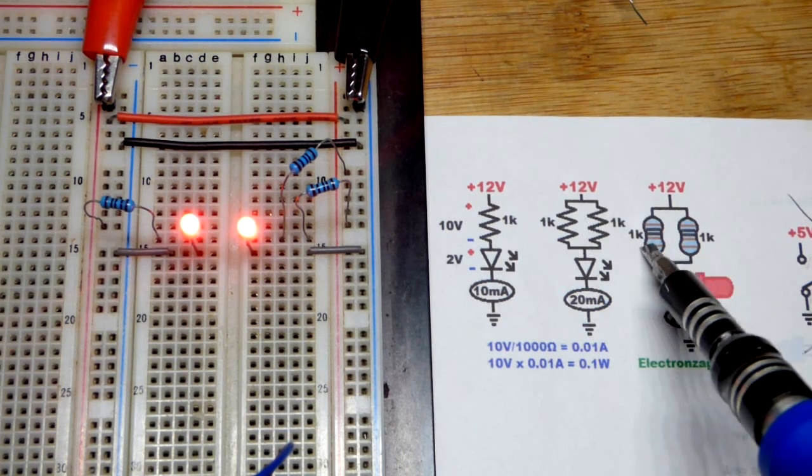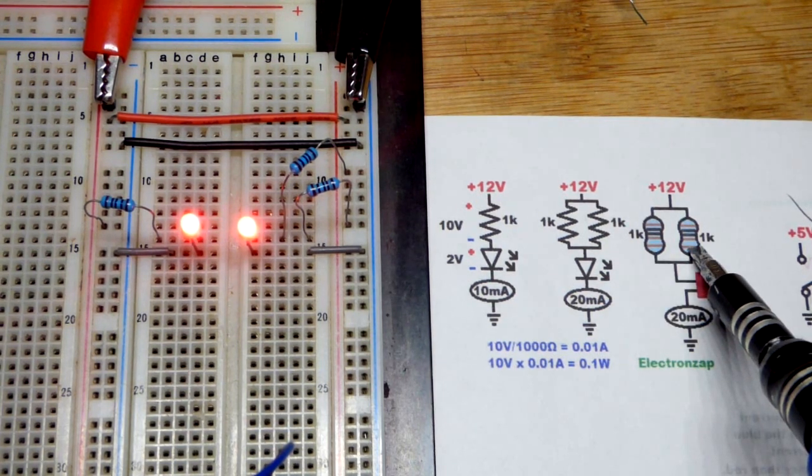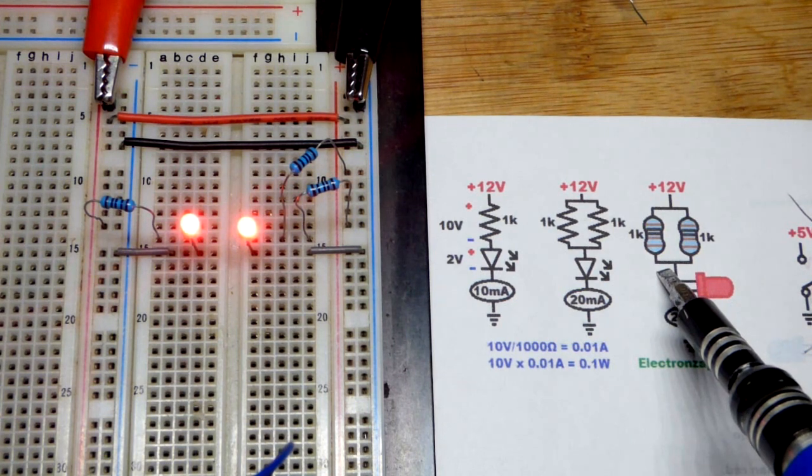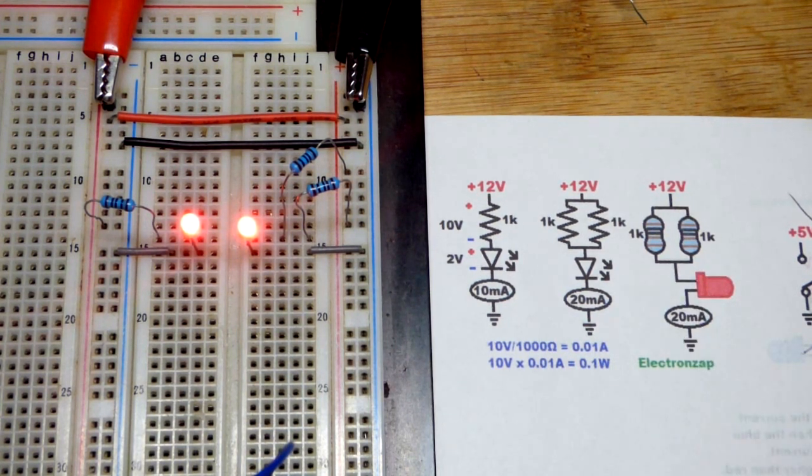When they're equal values it's very easy. Two equal value resistors, you'll have half the equivalent resistance and you'll get twice the current flowing through a circuit.